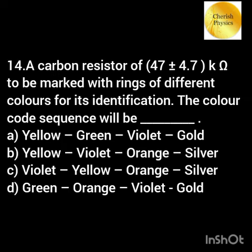A carbon resistor of 47 ± 4.7 kilo ohm is to be marked with rings of different colors. The color code sequence will be?